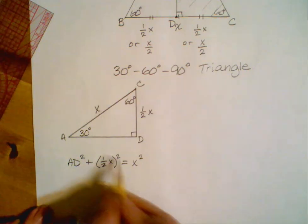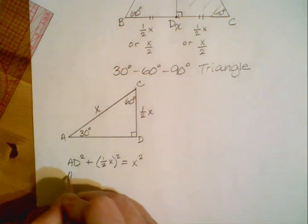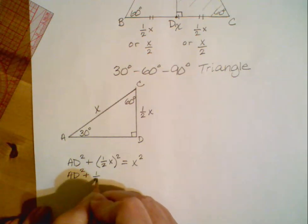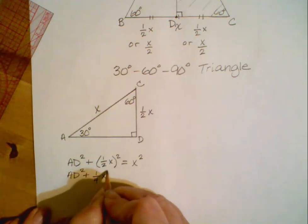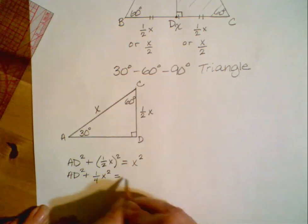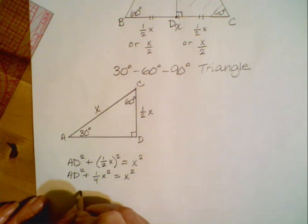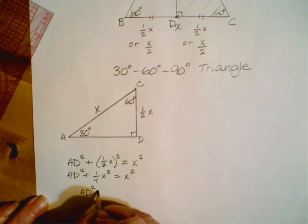So let's multiply this out. AD squared is going to stay the way it is. When we square 1 half, when we multiply 1 half times 1 half, we get 1 fourth. X times itself, or x squared. And over here on the right, it's going to be equal to x squared. Next thing we want to do is get all of those x squared terms on one side of the equation. Remember, we're trying to find the length of segment AD. So that's the part that we want to isolate. So here I want to subtract 1 fourth x squared from both sides.